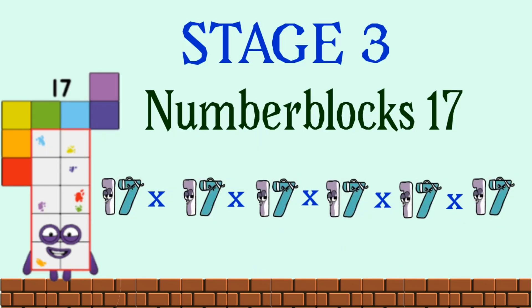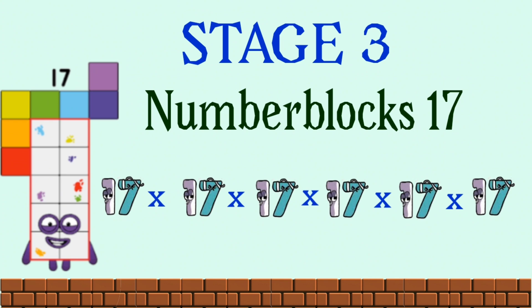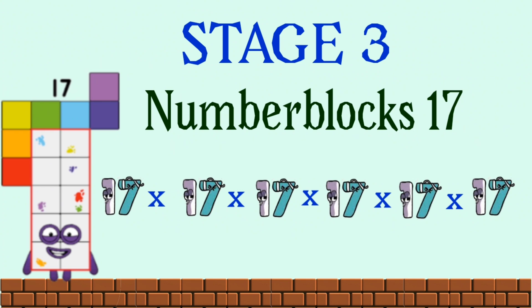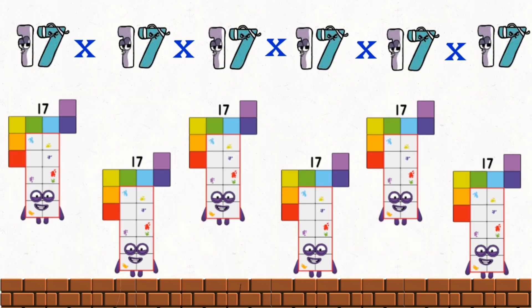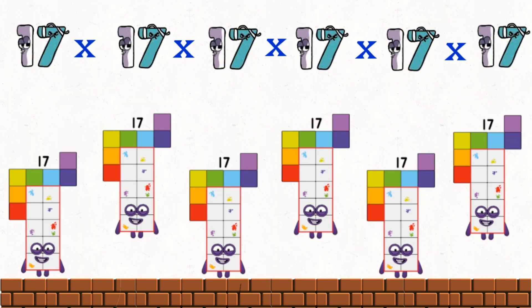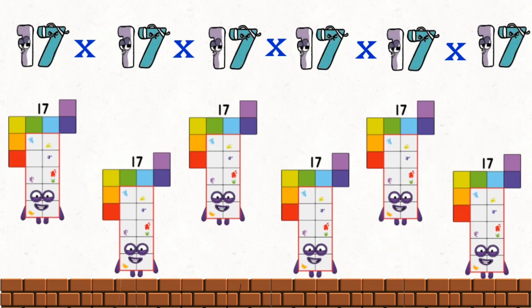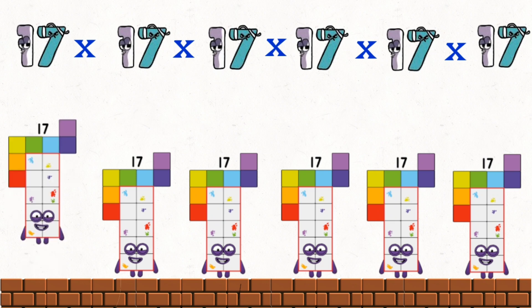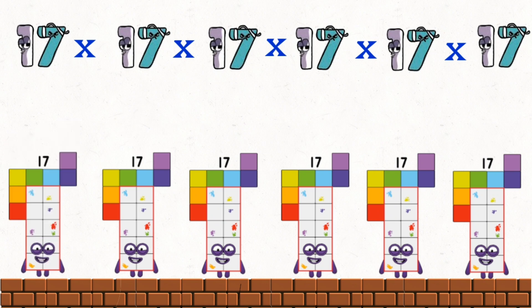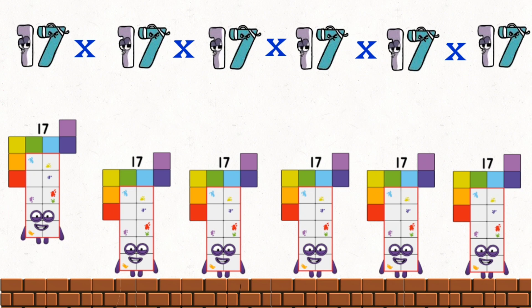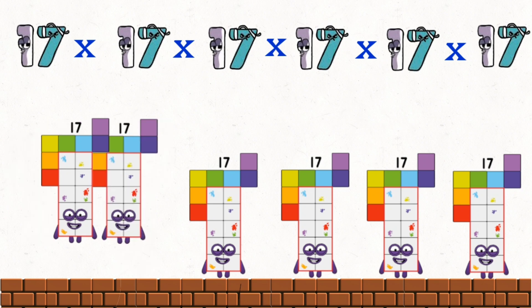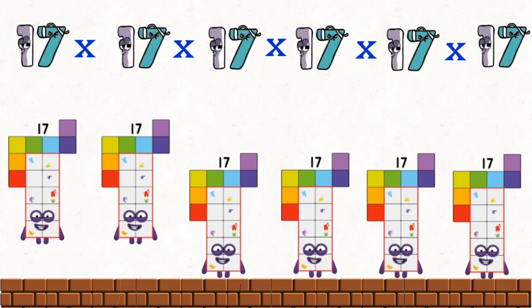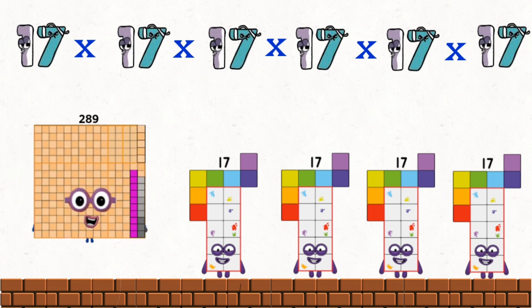Stage 3. Number blocks 17 times multiply number. 17 times 17 equals 289.